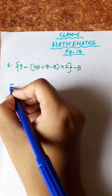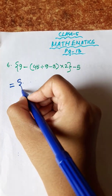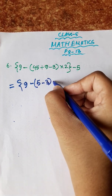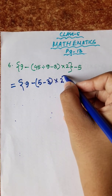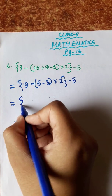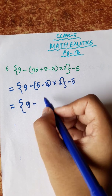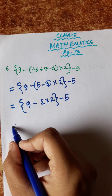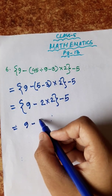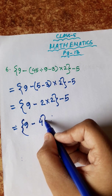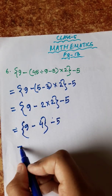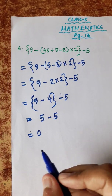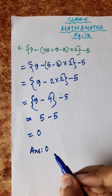Number 5: first bracket — 32 minus 14 is 18, into 6, minus 84 divided by 12. First multiplication: 18 into 6 is 108. Then 108 minus 84 is 24. 24 divided by 12 is 2. So answer is 2. Part number 6: 9 minus, bracket 45 divided by 9, minus 3 into 2. First bracket: 45 divided by 9, minus 3 into 2.